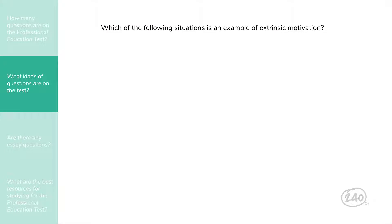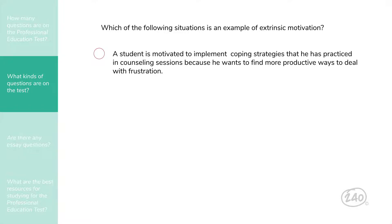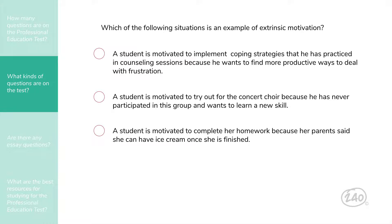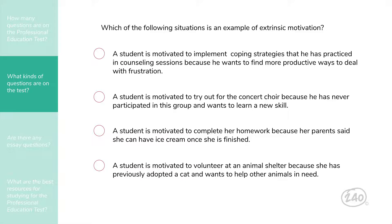Here is an example of a direct multiple choice question from 240 Tutoring's professional education test practice exam. Which of the following situations is an example of extrinsic motivation? A) A student is motivated to implement coping strategies that he has practiced in counseling sessions because he wants to find more productive ways to deal with frustration. B) A student is motivated to try out for the concert choir because he has never participated in this group and wants to learn a new skill. C) A student is motivated to complete her homework because her parents said that she can have ice cream once she is finished. D) A student is motivated to volunteer at an animal shelter because she has previously adopted a cat and wants to help other animals in need.